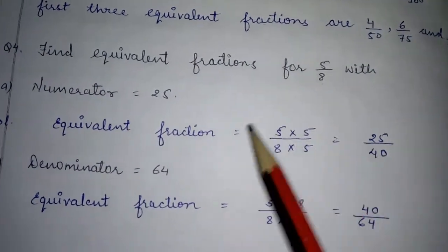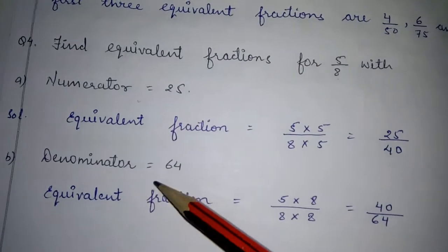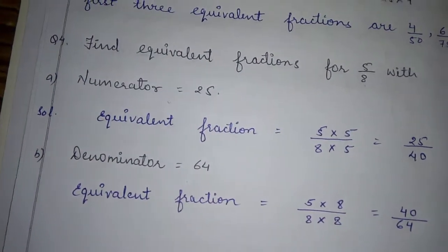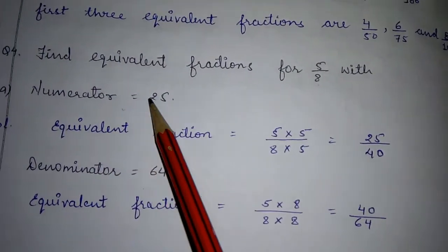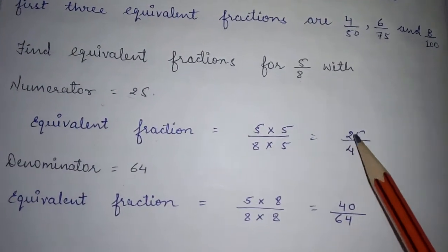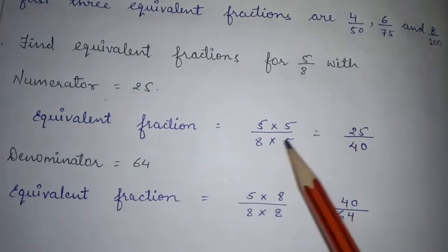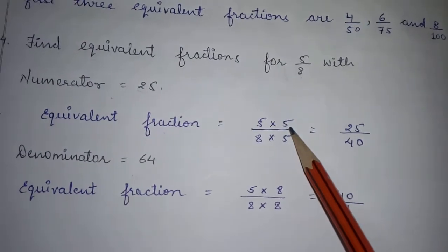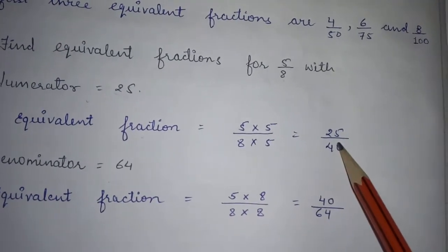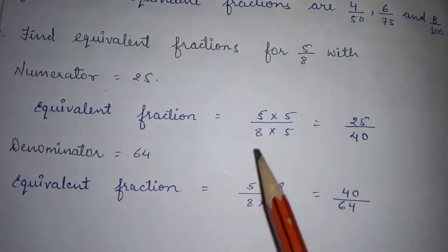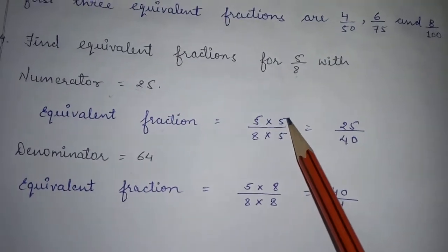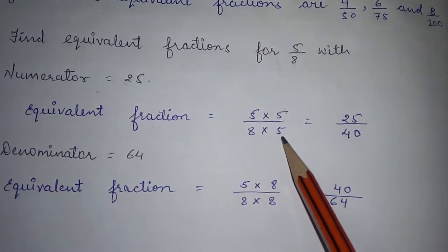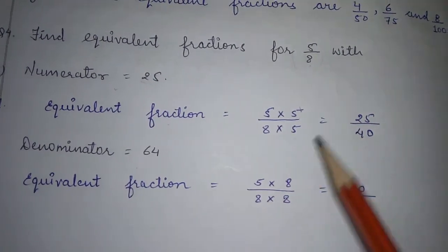Aapko 5 by 8 ke equivalent fractions find karne hain. Yahan ek numerator diya gaya hai aur ek denominator diya gaya hai. Dekho — numerator 25 hona chahiye. 5 mein kis number ka multiply karein ki 25 mile? Obviously 5 — because 5×5=25. To jo aap upar multiply karte hain wohi neeche denominator mein bhi karna padta hai: 8×5=40. So our equivalent fraction is 25 by 40.